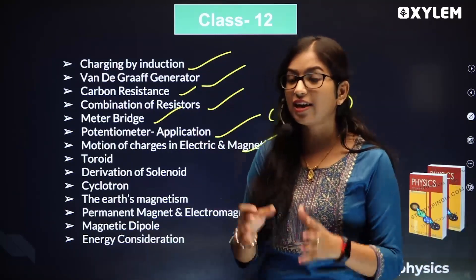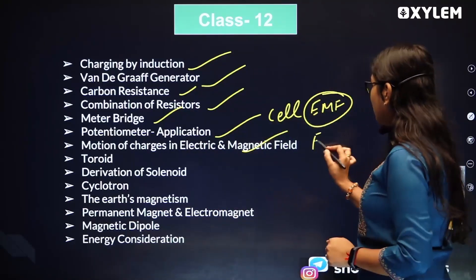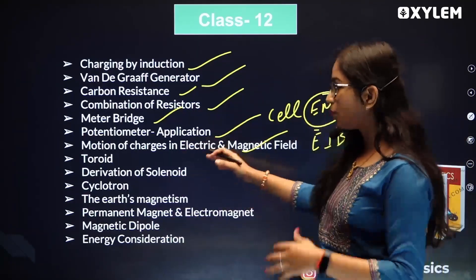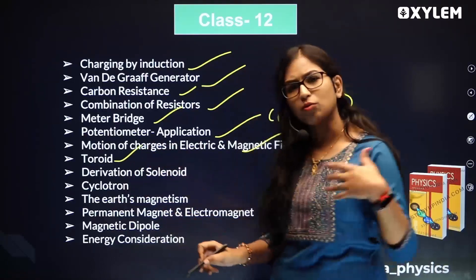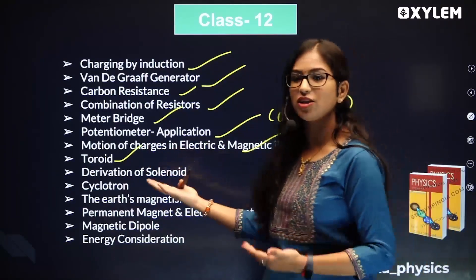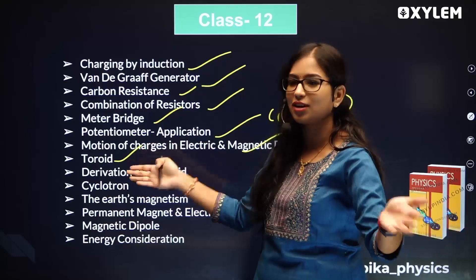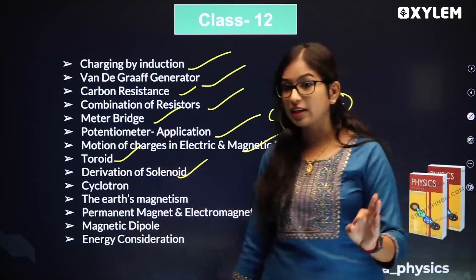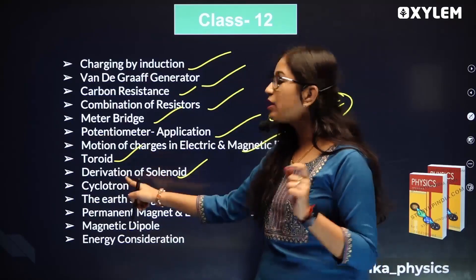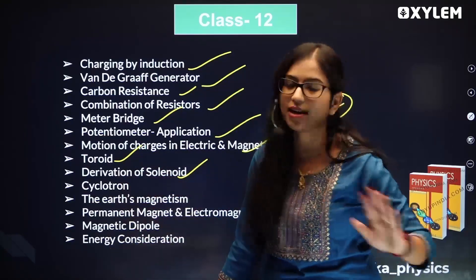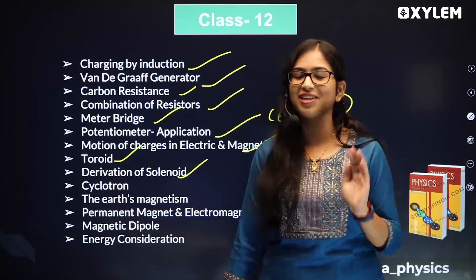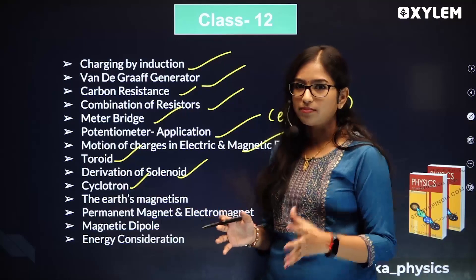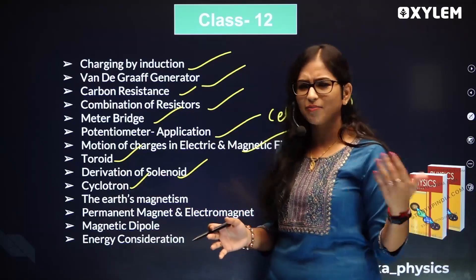Motion of charges in electric and magnetic field - deleted. Toroid - deleted. Solenoid is a topic but purely conceptual. Cyclotron is deleted. From magnetism: earth's magnetism is not in the syllabus, and permanent magnets and electromagnets are also removed. Magnetic dipole is literally easy but also deleted.